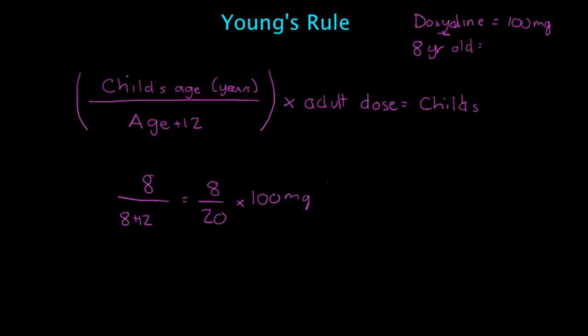And when we do that, when we have eight over 20 times 100 milligrams, that's going to give us 40 milligrams for an eight-year-old. So let's say you want the patient, the eight-year-old to take 100 milligrams twice daily. That means you're going to give them 40 milligrams twice daily.